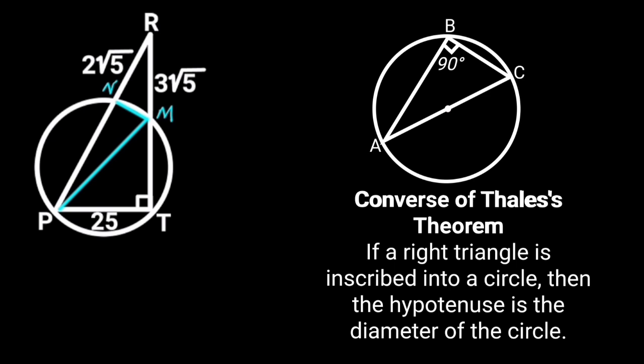Let's recall the converse of Thales' theorem. It states that if a right triangle is inscribed into a circle, then the hypotenuse is the diameter of the circle. Since triangle PMT is a right angle triangle, from this theorem it follows that PM is the diameter of the circle.